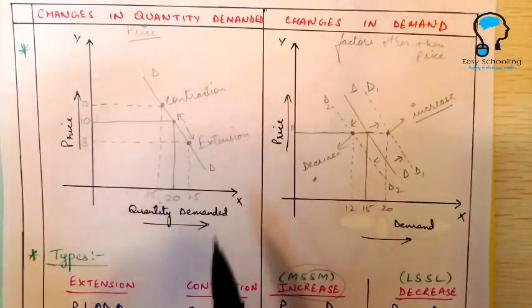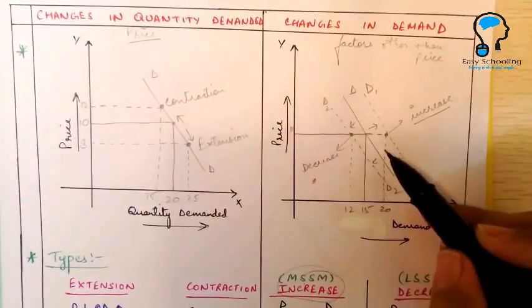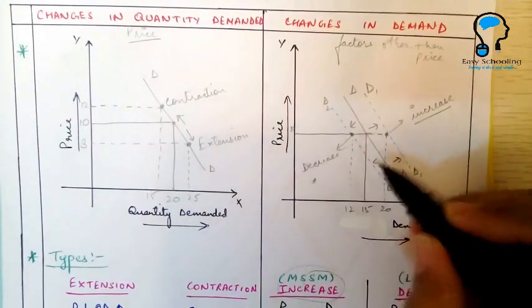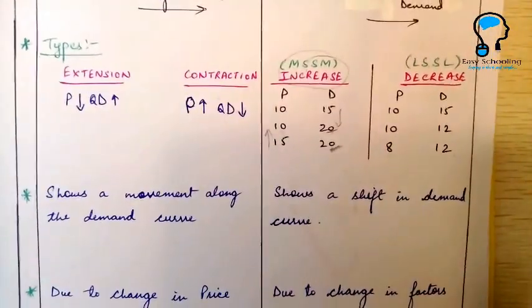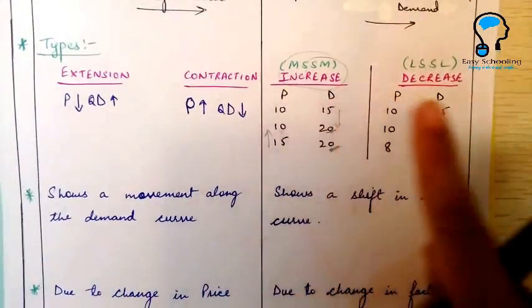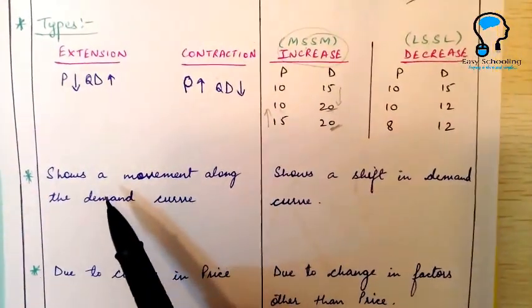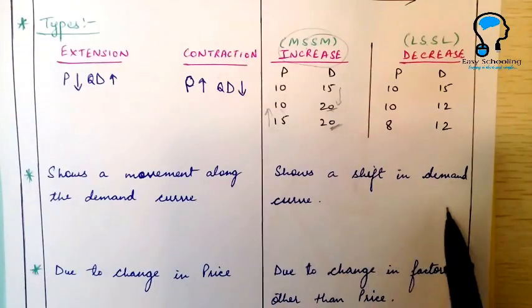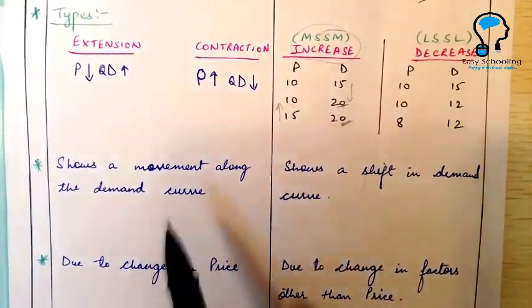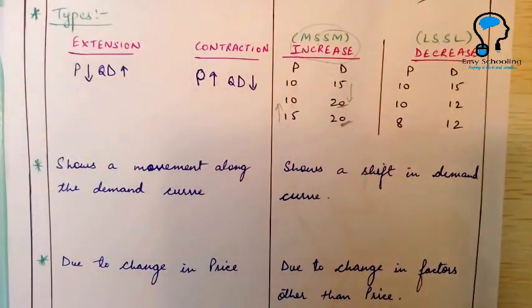So we have understood that changes in quantity demanded show a movement along the same demand curve, but changes in demand show a shift in the demand curve. If the demand curve shifts to the right it is an increase in demand; if it shifts to the left it is a decrease in demand. The key points are: the types are extension and contraction for quantity demanded, and increase and decrease for demand. Changes in quantity demanded are due to changes in price, and changes in demand are due to change in factors other than price.